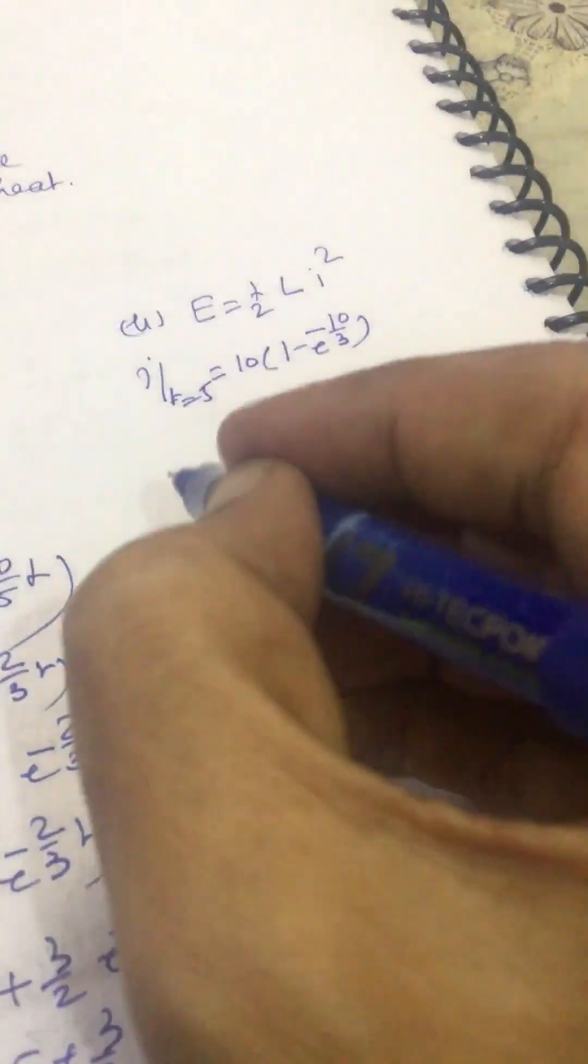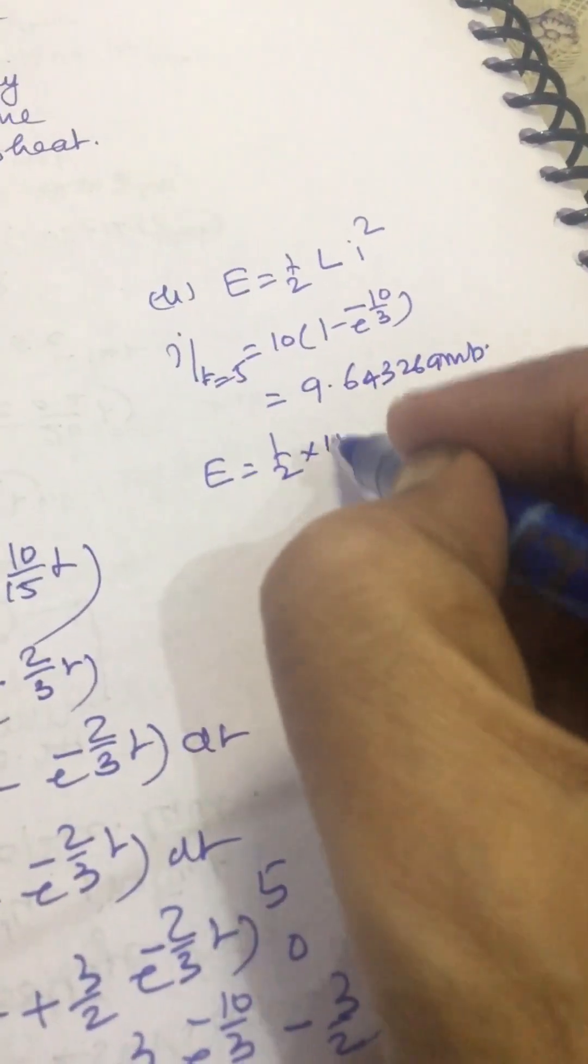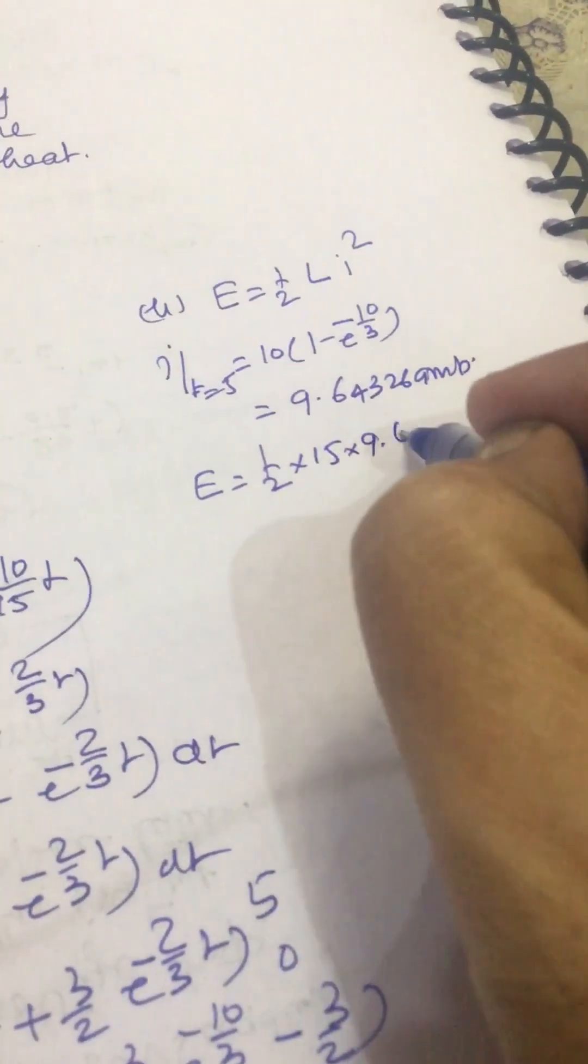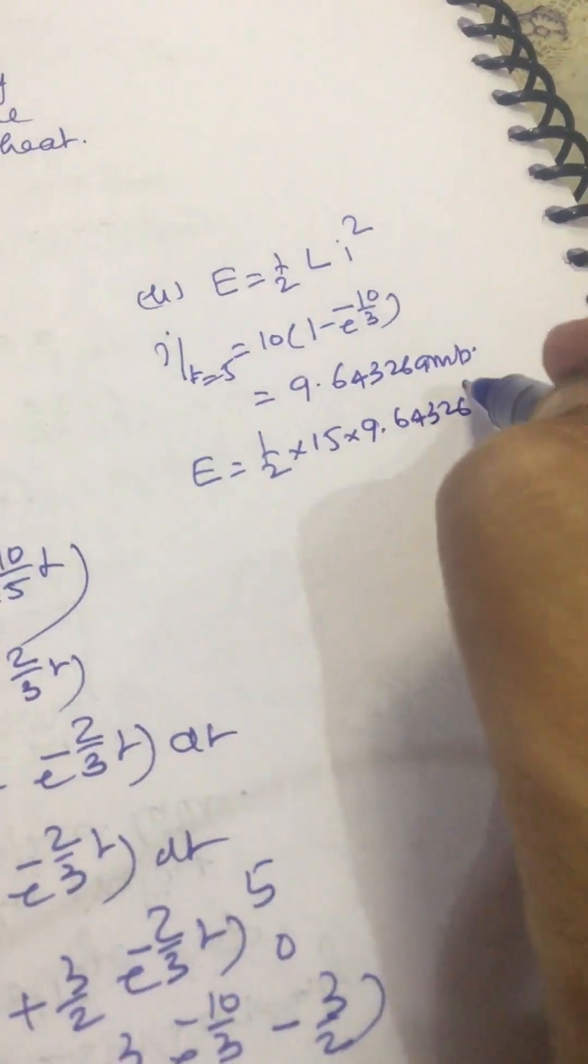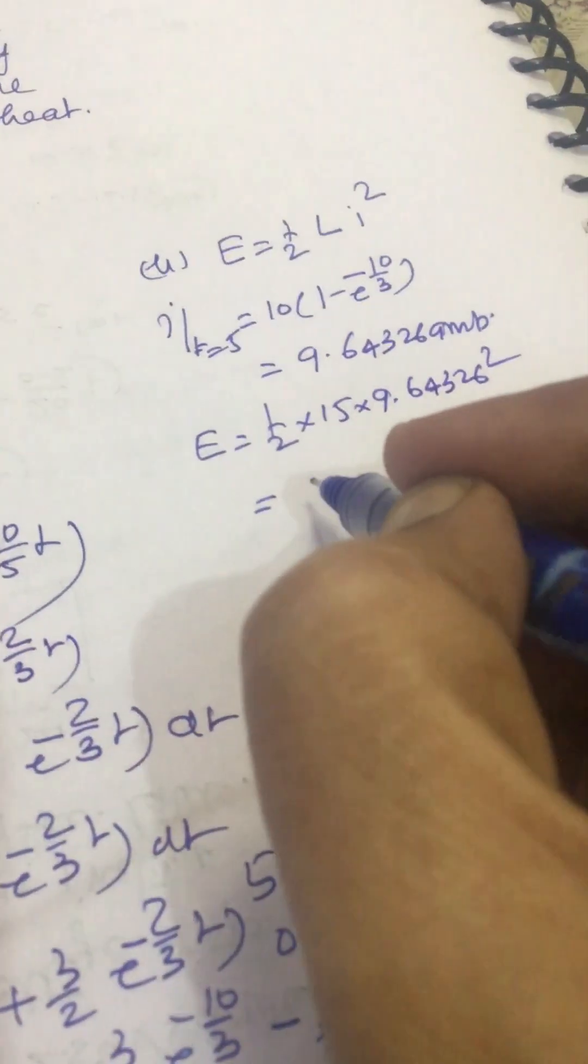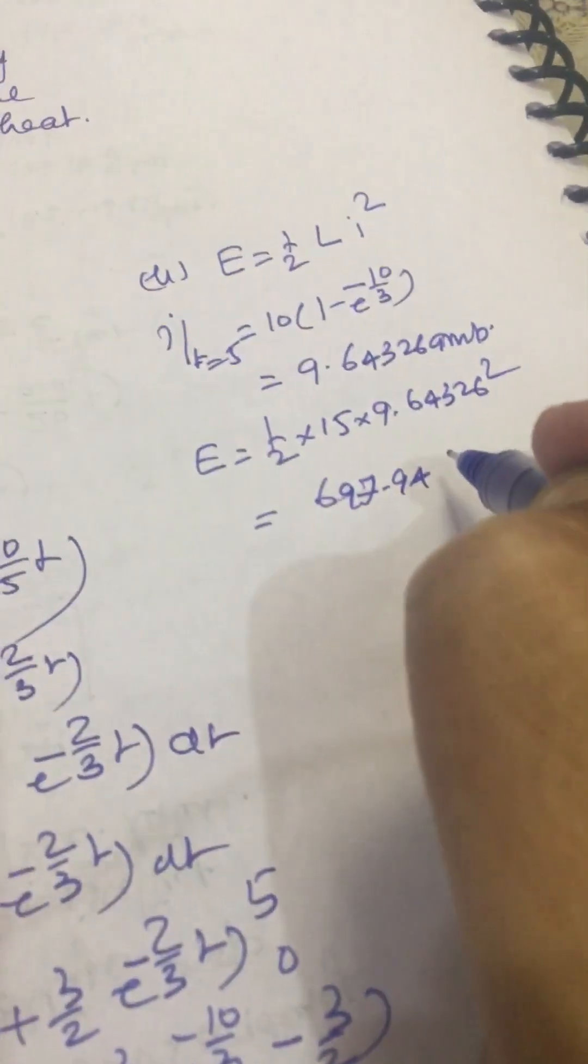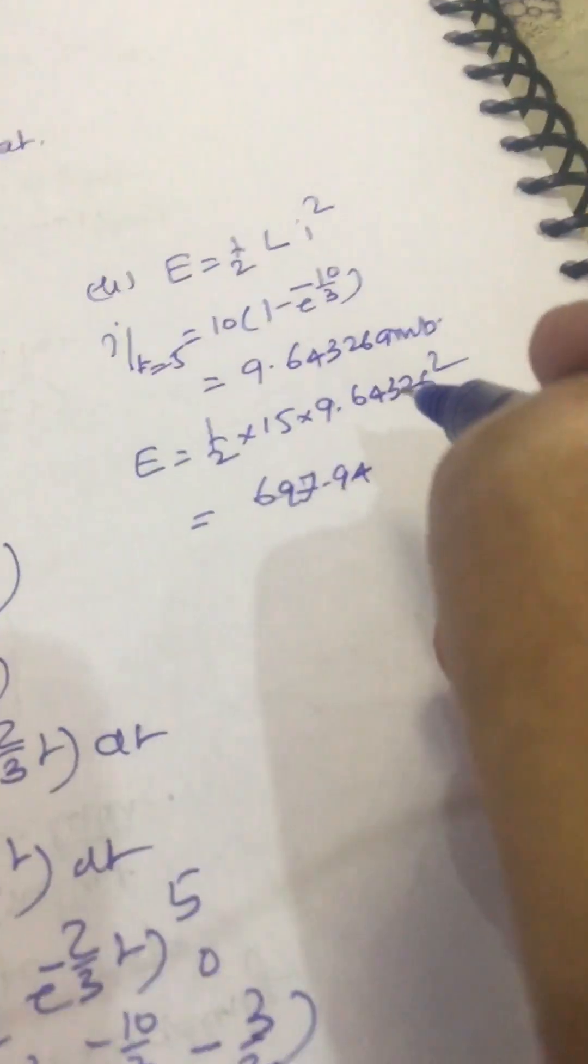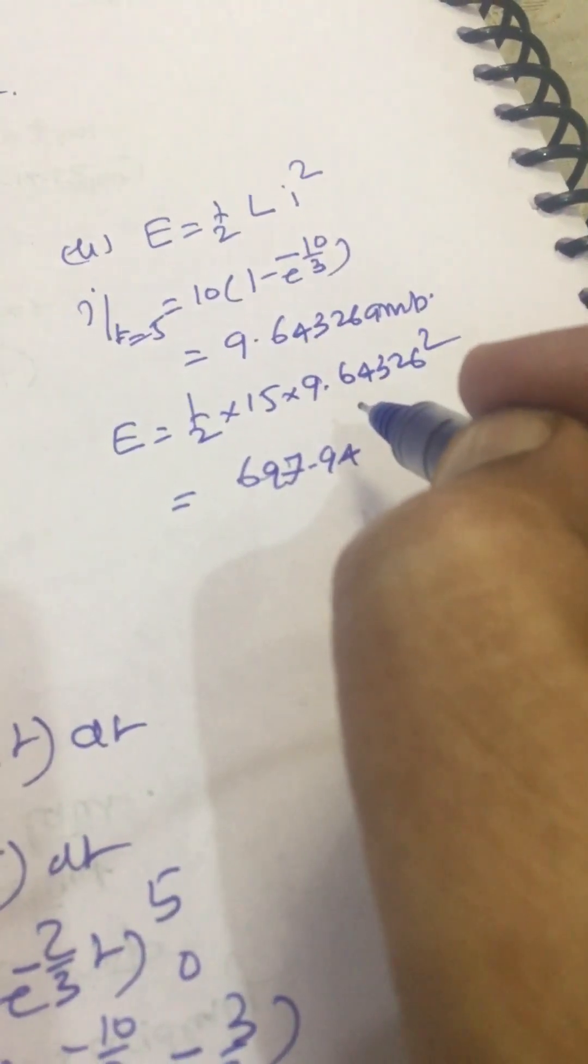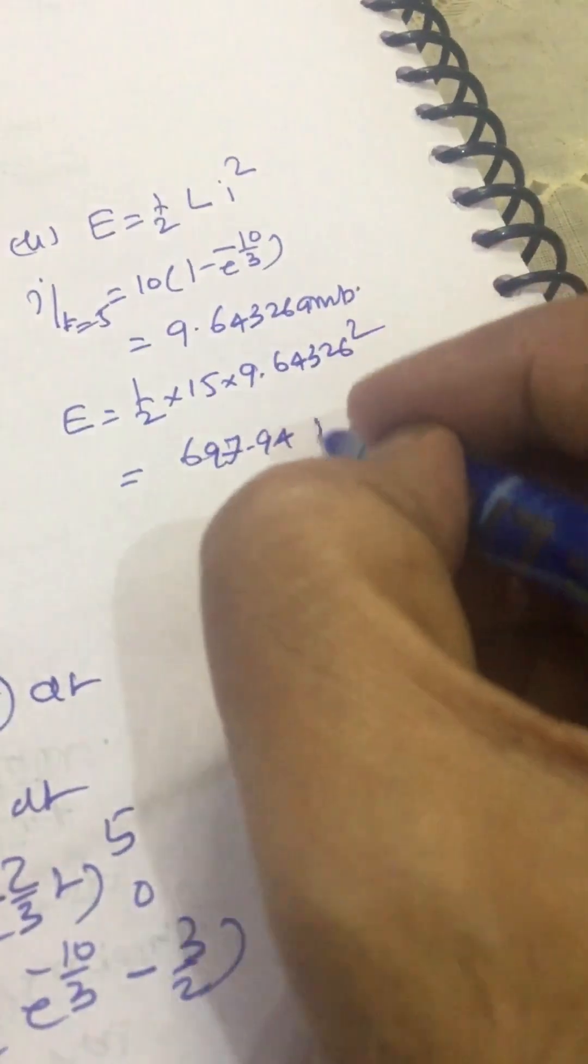Energy stored in inductance will be half L i squared, which is half times 15 into 9.64 squared, equal to 697.4 joules.